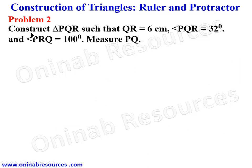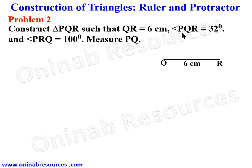We go to problem two. Construct triangle PQR such that QR is equal to 6 centimeters, angle PQR is 32 degrees, and angle PRQ is 100 degrees. Measure PQ. In this construction we are given one side and two angles. We sketch the triangle: QR is the base at 6 centimeters, angle PQR — that is the angle at Q — is 32 degrees, and angle PRQ — the angle at R — is 100 degrees. This gives us point P.